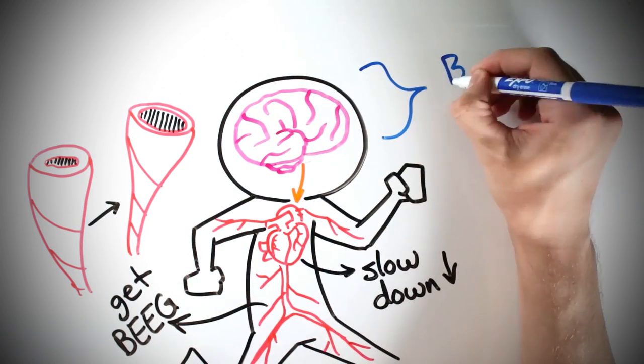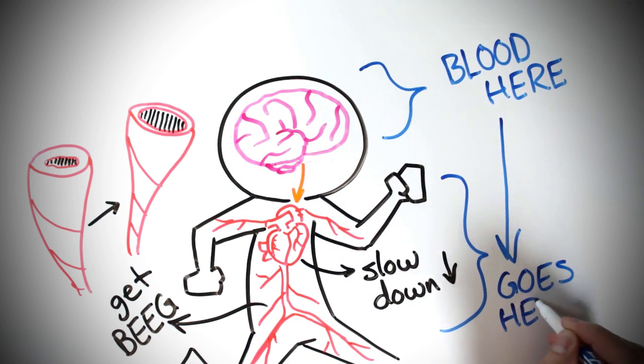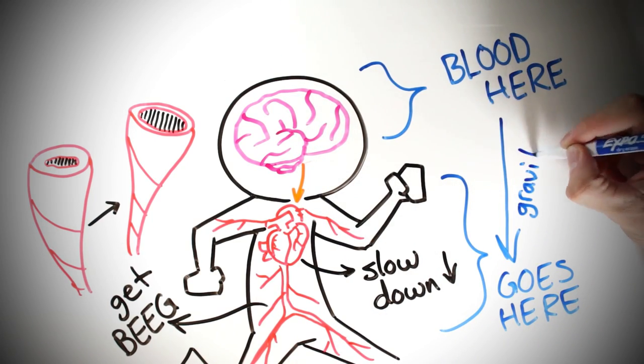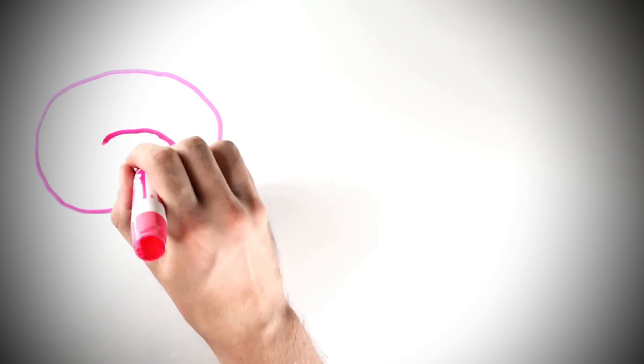Now, what this does is it makes a lot more space in your blood vessels, and that space needs to be filled by something. Thanks to gravity, it makes all your blood from up here go down here to fill that space. The bad thing about this is that you're losing blood that was in your head, and your brain needs blood because blood provides oxygen.